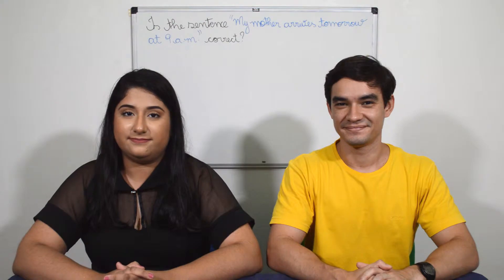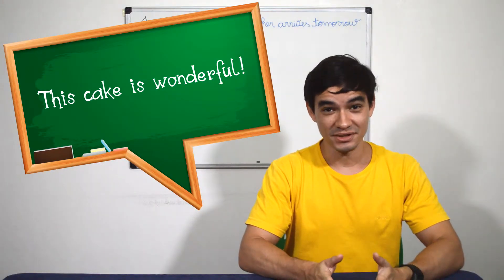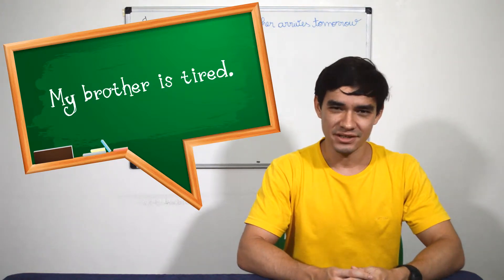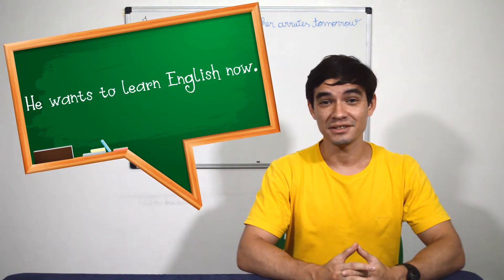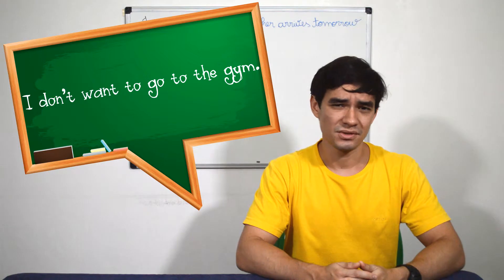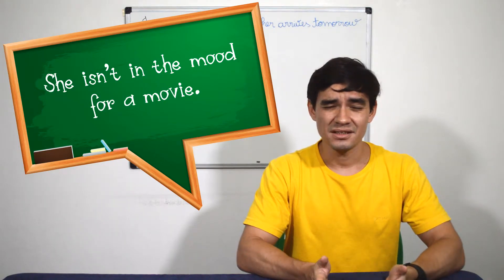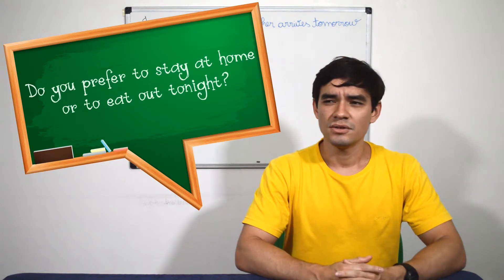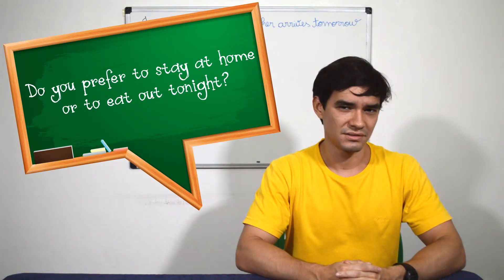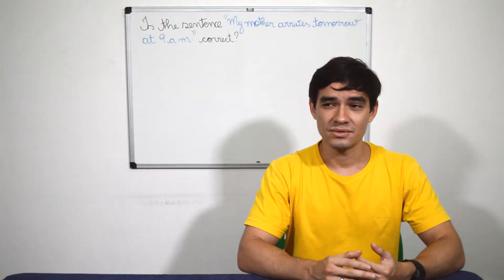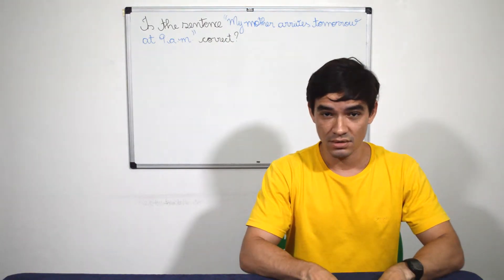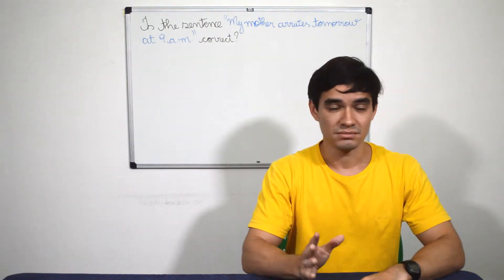The second use isn't about something that is always true, but about current thoughts and feelings. Examples: this cake is wonderful. My brother is tired. I love my girlfriend very much. He wants to learn English now. I don't want to go to the gym. She isn't in the mood for a movie. Do you prefer to stay at home or to eat out tonight? Where do you want to go? So, the second use has to do with something that is true now. Maybe it won't be true in the future, but it is now.